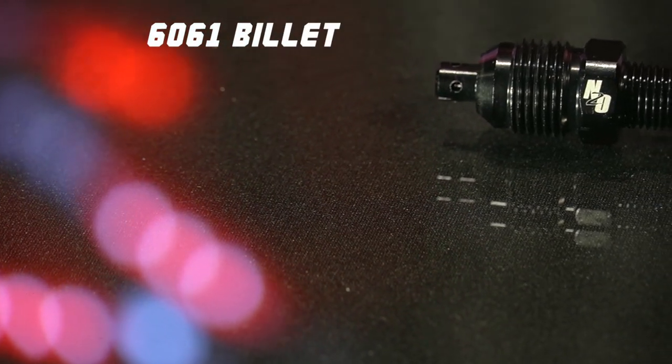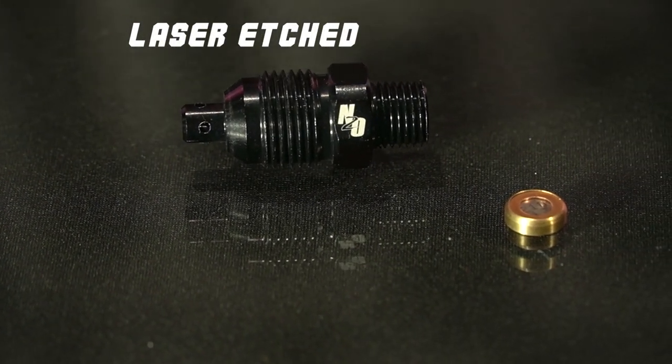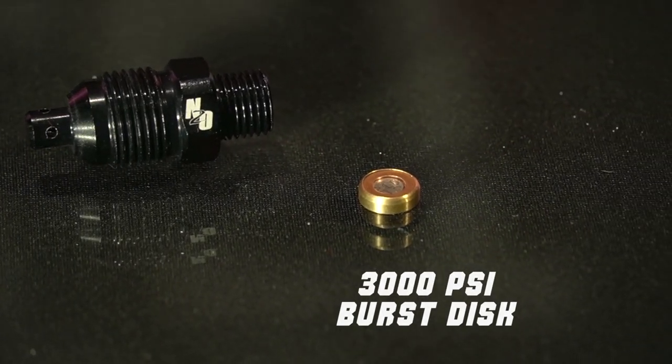Made from 6061 billet aluminum, anodized black, laser etched with the nitrous outlet logo, and includes a 3000 psi burst disc.